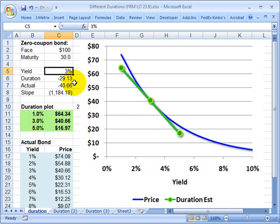And in this case, the duration changes again. And at 3%, our duration is negative 29.13. And you'll notice it's very close to the maturity.